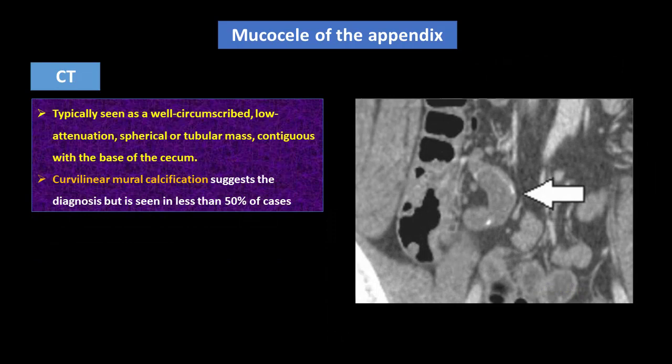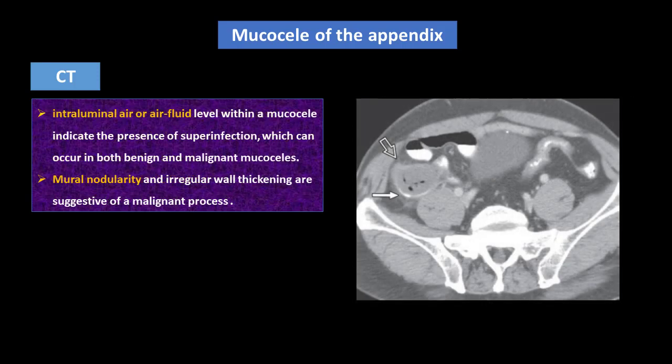On CT, they are typically seen as a well-circumscribed, low attenuation, spherical or tubular mass contiguous with the base of the cecum. Curvilinear mural calcification suggests the diagnosis, but is seen in less than 50% of cases. Intraluminal air or air-fluid level within the mucocele indicates the presence of superinfection, which can occur in both benign and malignant mucoceles. Mural nodularity and irregular wall thickening are suggestive of a malignant process.